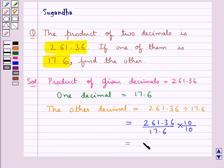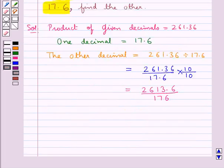So this is equal to 2613.6 divided by 176. Now we can easily divide this new dividend by the whole number so obtained.